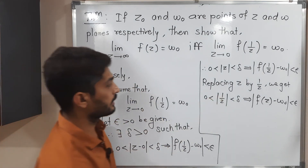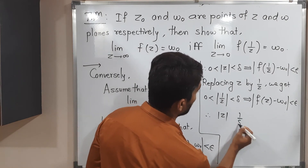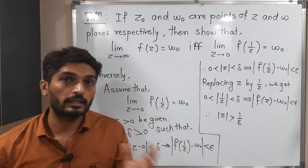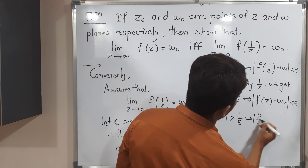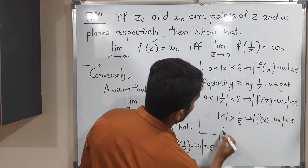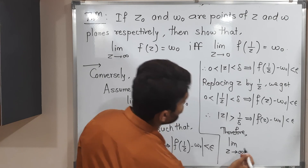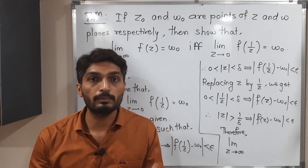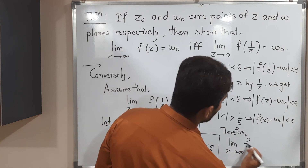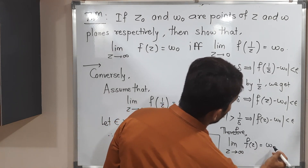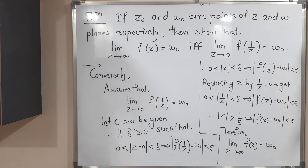Taking the reciprocal of both sides, z moves to the numerator and we get 1/delta on the other side. Since taking a reciprocal reverses the inequality, we get mod z greater than 1/delta implies mod f(z) minus w₀ less than epsilon. By the definition of limit, since mod z is greater than 1/delta — representing a very large value — z approaches infinity. Therefore, limit as z tends to infinity of f(z) equals w₀, which is exactly what we wanted to prove. In this way, we have proved the theorem.